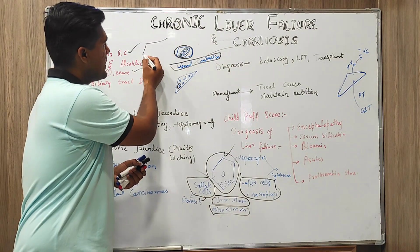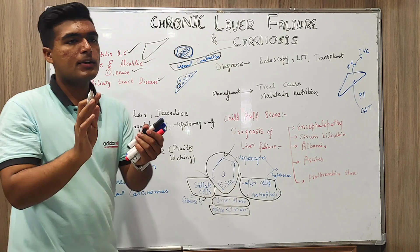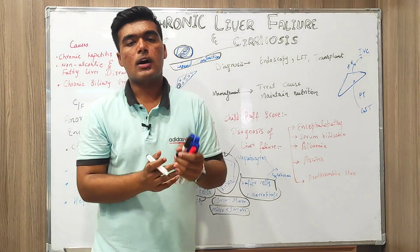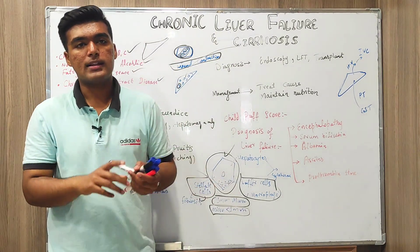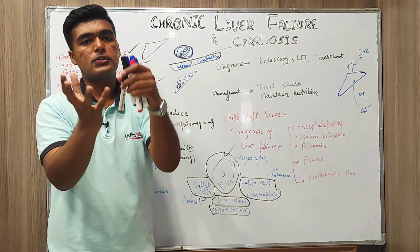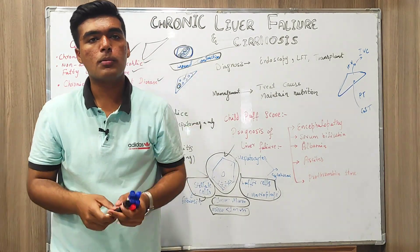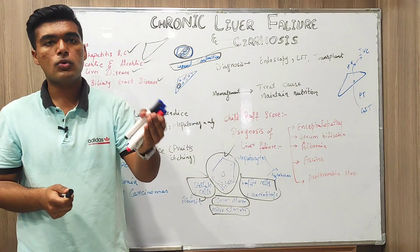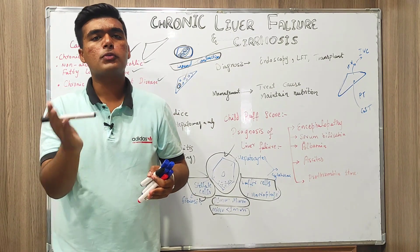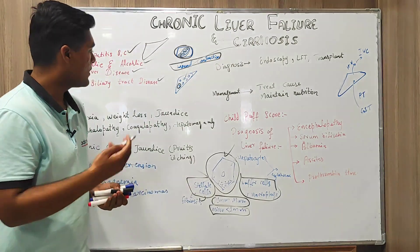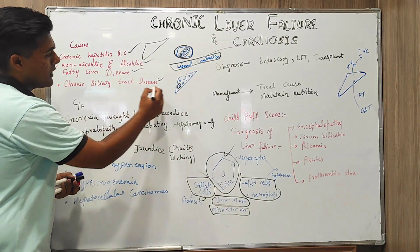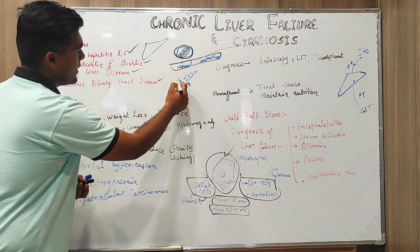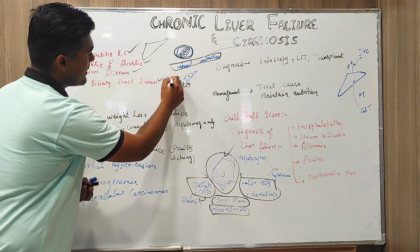Looking at the simple anatomy of the liver, we have the right lobe, left lobe, and the falciform ligament. Posteriorly we have the quadrate lobe and arteries and veins. The gallbladder is there for storage of bile, which is synthesized in the liver.